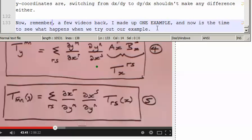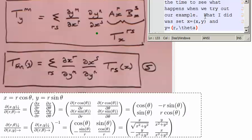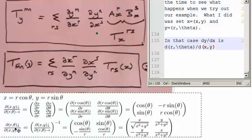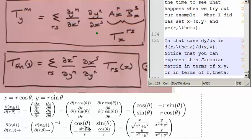Now remember a few videos back, I made up one example, and now is the time to see what happens when we try out our example. What I did was set x equal x,y, and y is r,theta, and then when figuring out del y sub m del x sub r, in that case, dy dx is dr theta dxy. Notice that you can express this Jacobian matrix in terms of x and y, as it is over here, or in terms of r and theta, as it is here.